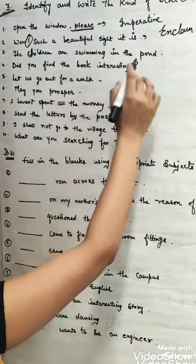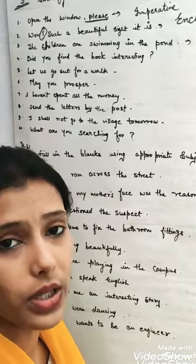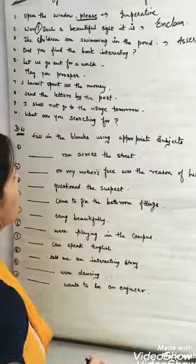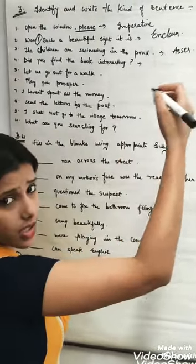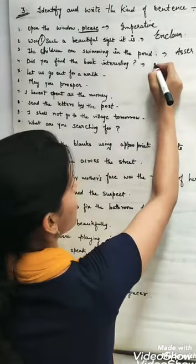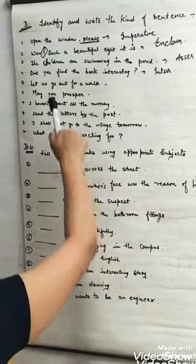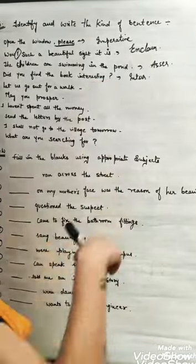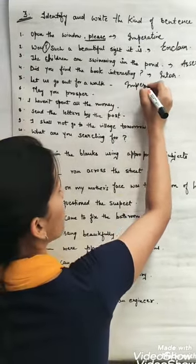The children are swimming in the pond. It's just normal statement that is ending with a full stop. So it is assertive or declarative. Did you find the book interesting? It's an interrogative. Let us go out for a walk. It's a suggestion that we should go out for a walk. And when we suggest something, then it's an imperative sentence.